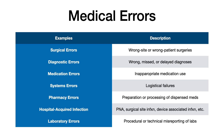Let's run through some examples that could show up on your exam: surgical errors, diagnostic errors, medication errors, systems errors, pharmacy errors, hospital acquired infections, and laboratory errors. Surgical errors would be if the wrong organ is taken out, or in more horrible cases, if the wrong patient gets the wrong surgery. Diagnostic errors — if somebody's given the wrong diagnosis — are actually quite common, unfortunately.